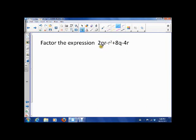So if I want to factor the expression 2qr minus r squared plus 8q minus 4r, the giveaway to what you should use here should be the fact that there's q's and r's. And there's four terms. So that would mean that you should try to group them and see what happens. So your first question is, is grouping going to work?